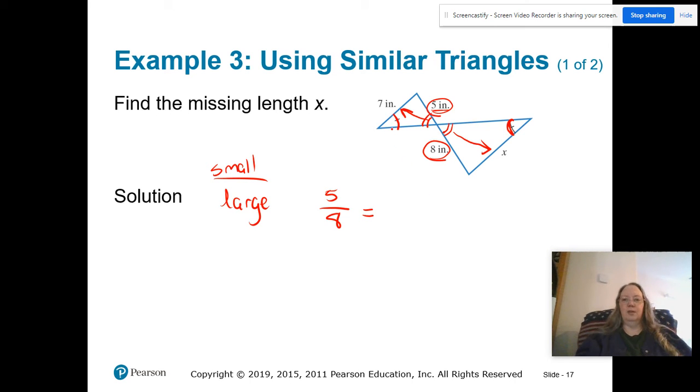So I started with the small triangle on top. This is from the small triangle. And my large triangle is x right there. And because it's a proportion, we are going to cross multiply. Five times x is 5x. And eight times seven is 56.